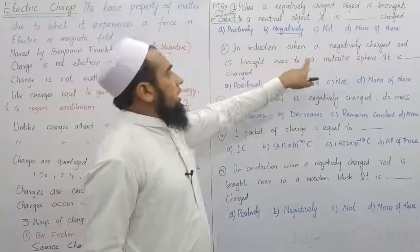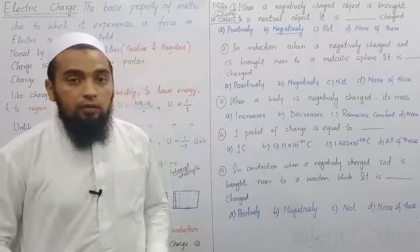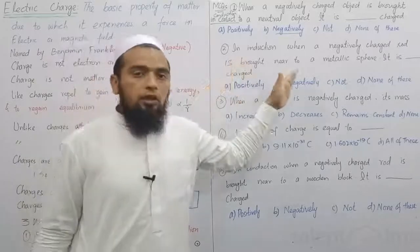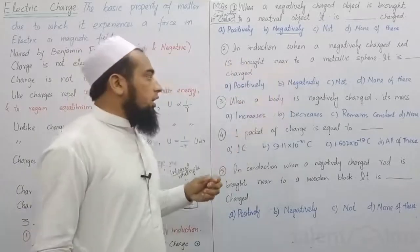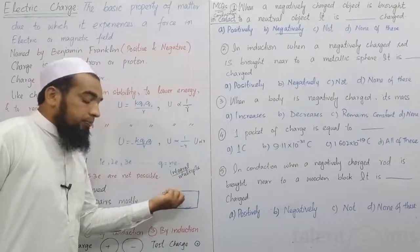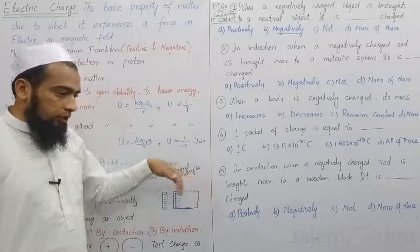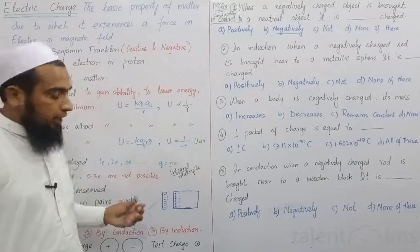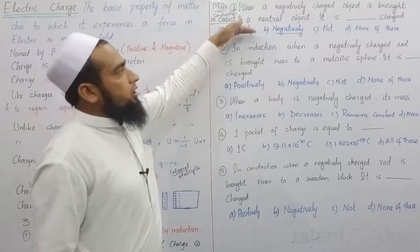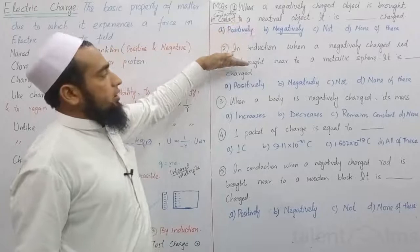Question: In induction, when a negatively charged rod is brought near a metallic sphere, what charge develops on its surface? In induction, the negative rod repels the negative charges in the sphere, and positive charges accumulate on the near surface. So a positive charge develops on the surface. Remember: in conduction, the same charge transfers; in induction, usually the opposite charge appears.